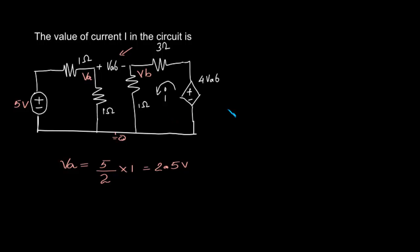Now, what is VB? VB is 4*VAB divided by total resistance 3 plus 1, that is 4, times 1 ohm.